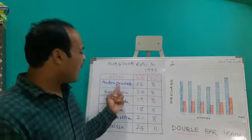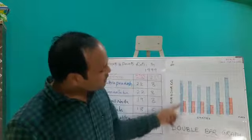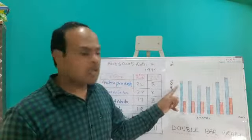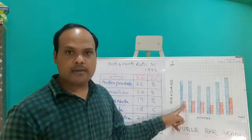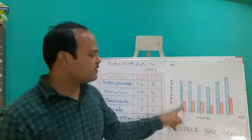Now, how to take? Andhra Pradesh, birth rate is 22. Here, I am taking the birth rate with the blue color and death rate with the red color. So here, birth rate 22 while death rate 8 is represented with red color.